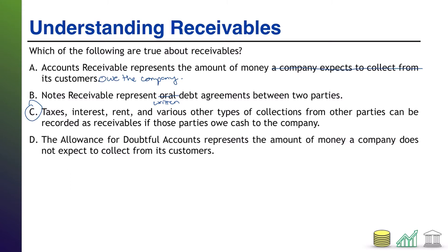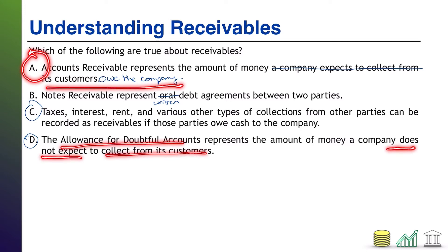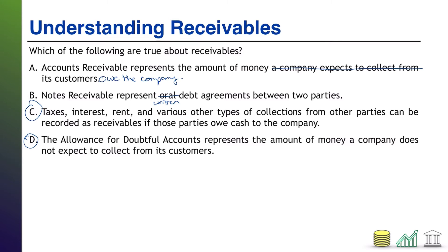And how about D: the allowance for doubtful accounts represents the amount of money a company does not expect to collect from its customers. That one is also true. Revisiting part A, accounts receivable is the amount customers owe. The allowance is the amount you do not expect to collect. When you net those two together, you get what's called the net realizable value of AR, and that is what you actually expect to collect from the customers.